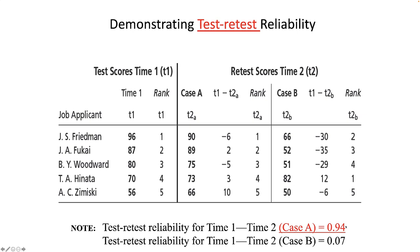In Case B, not only did scores change wildly but so did rankings. Friedman goes from 96 to 66 — from ranking first to second. Hinata goes from 70 to 82 — from fourth place to first place. These wildly inconsistent changes result in a near-zero correlation; the test-retest reliability is only 0.07. With only five subjects, it is of course not a statistically significant correlation.